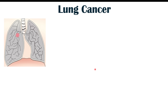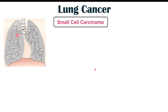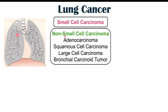Lung cancer can be broken down into two main categories: small cell carcinoma and non-small cell carcinoma, which has multiple types including adenocarcinoma, squamous cell carcinoma, large cell carcinoma, and bronchial carcinoid tumor.